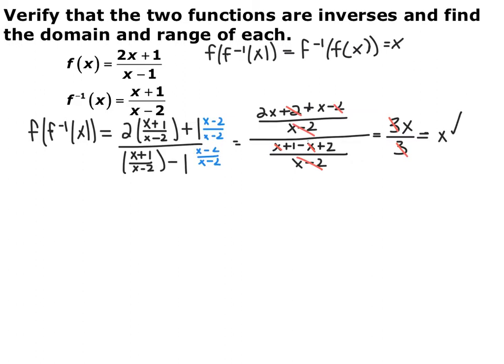When you do the composition, every time you see an x in f(x), you replace it with f⁻¹. You get 2·((x+1)/(x−2)) + 1 divided by ((x+1)/(x−2)) − 1. Using a common denominator and simplifying, the denominators cancel and you end up with 3x divided by 3, which is indeed x. But just because we got x here does not mean we can stop — we have to do f⁻¹ composed with f as well.